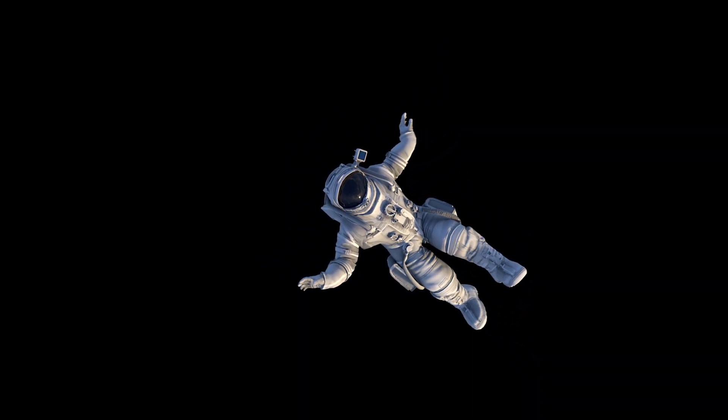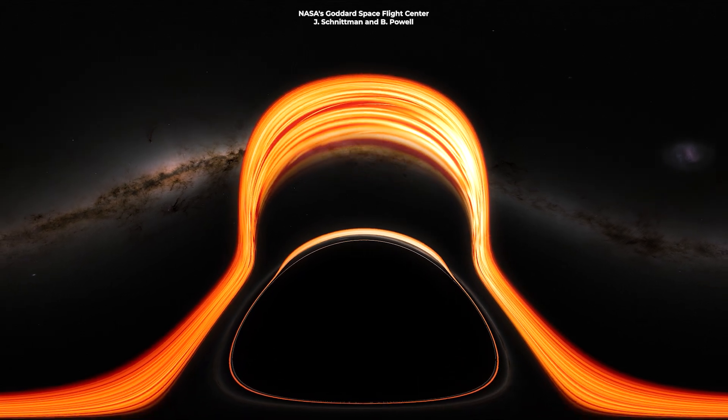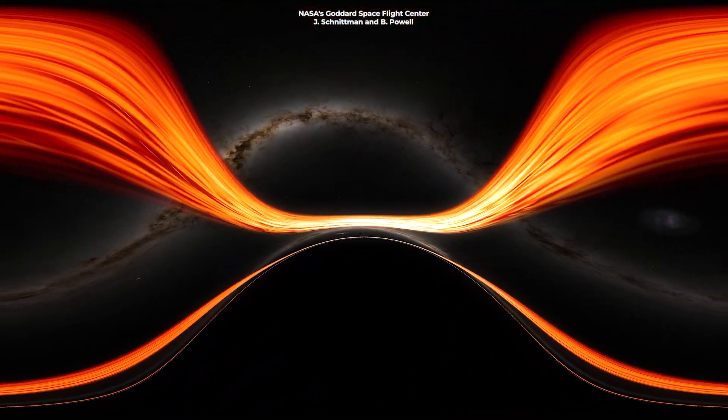If you were watching someone fall toward a black hole, you'd see their movement slow down as they got closer to the event horizon, the point of no return. To you, it would look like they were moving in slow motion, almost frozen in time. But to them, everything would feel normal. They wouldn't even notice the difference.